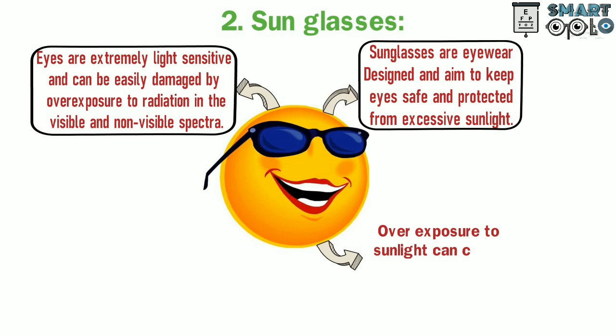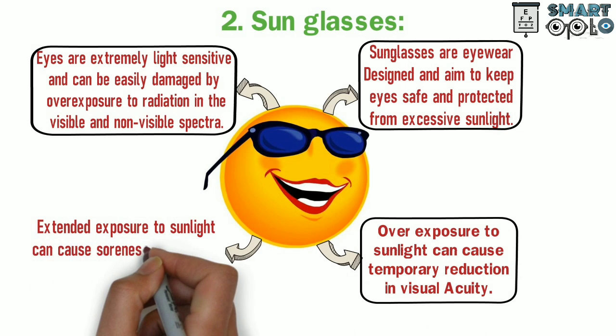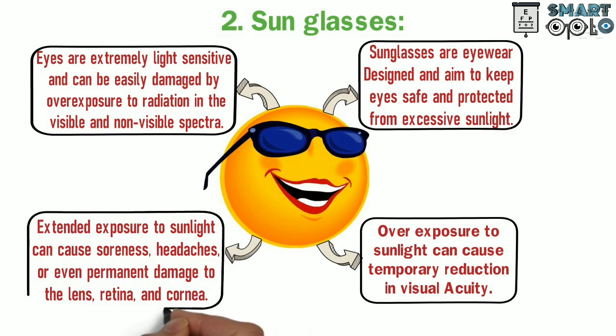Overexposure to sunlight can cause temporary reduction in visual acuity. Extended exposure to sunlight can cause soreness, headache, or even permanent damage to the lens, retina and cornea.